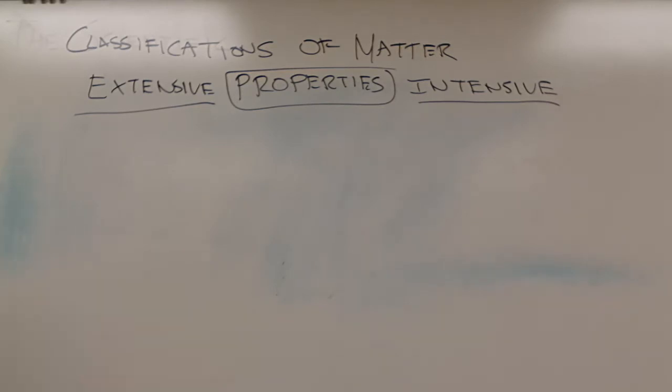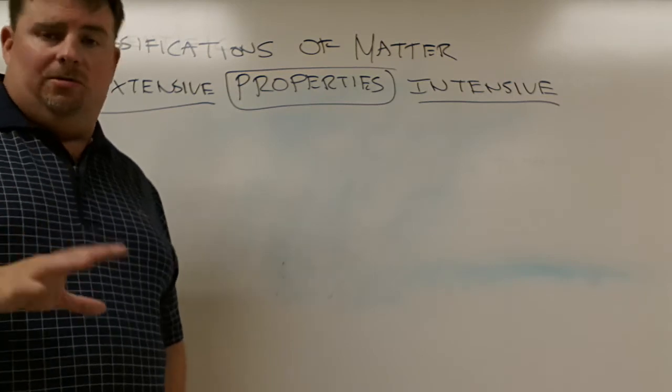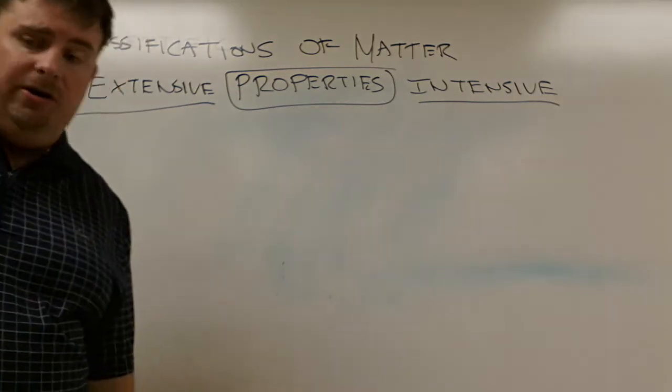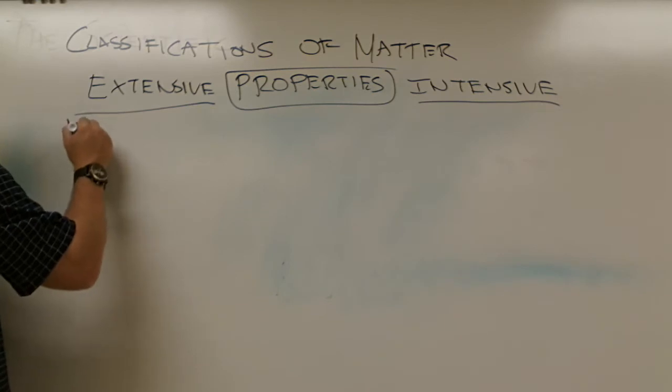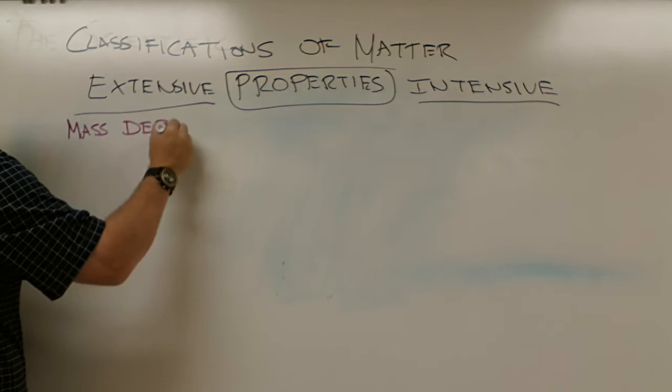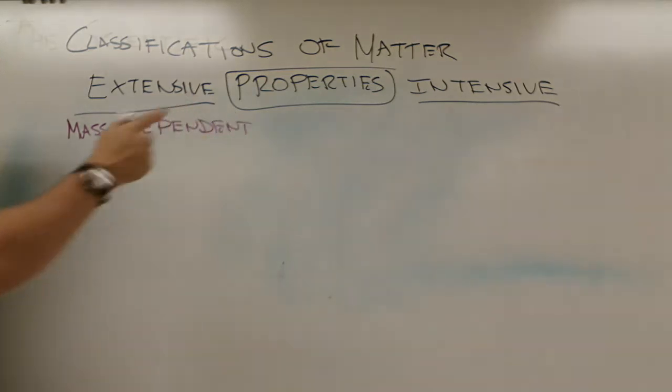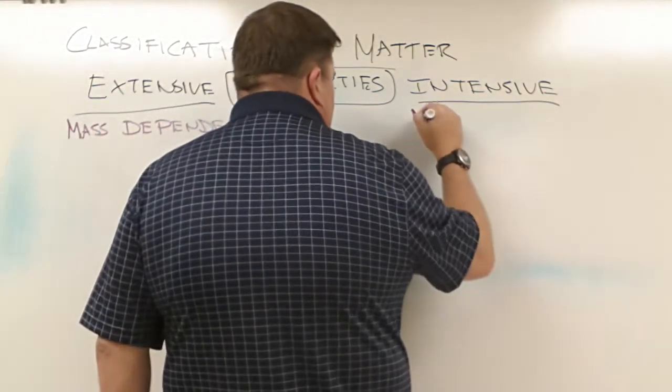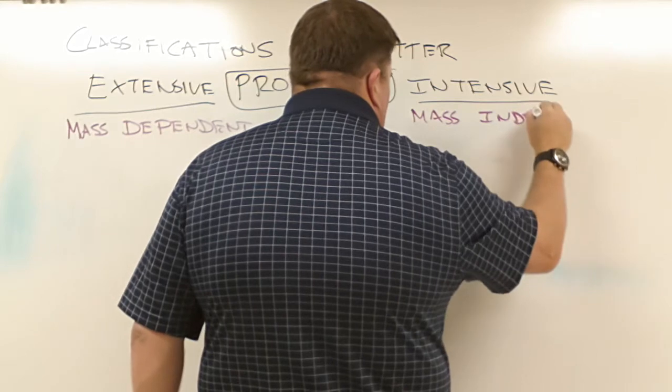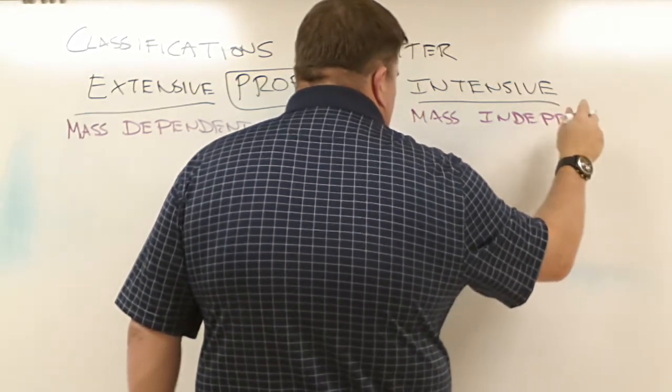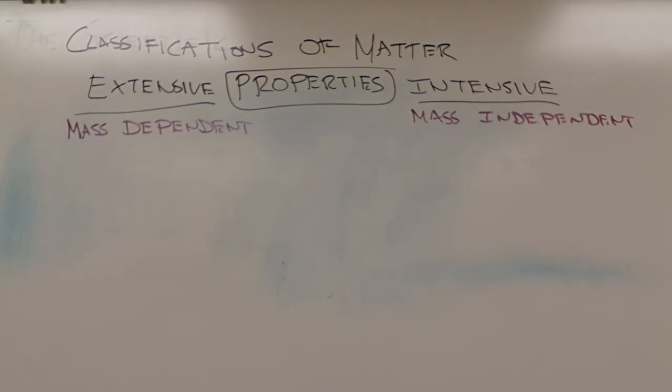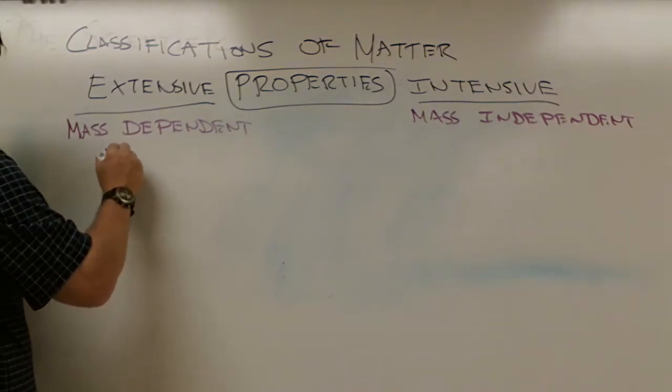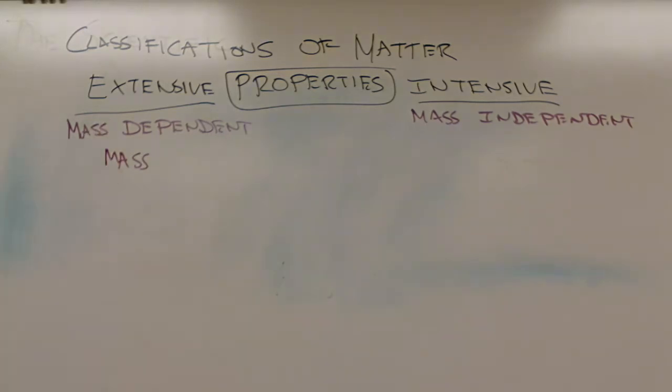We talk about extensive and intensive properties of different matter. We have to talk about what these two things are. An extensive property depends on the amount of mass. So this one we're going to call mass dependent. And obviously, intensive properties are going to be things that are mass independent. So certain properties of different matter are going to be either extensive or intensive. Obviously, the mass of a material is going to be extensive. You're going to have more mass the more of it that you add.